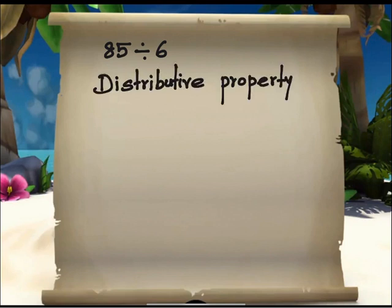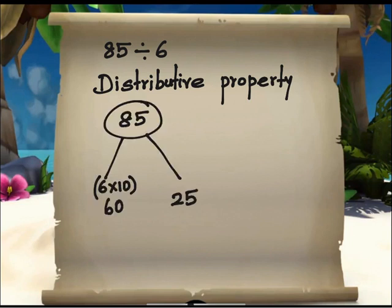So first, let us see distributive property. 85 is broken apart into two smaller parts, which is 60 and 25.